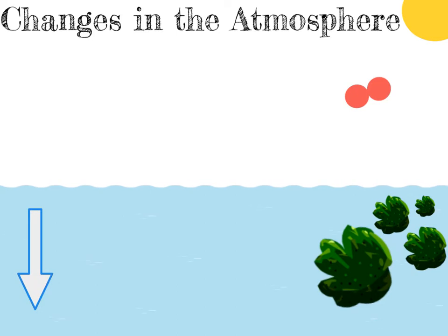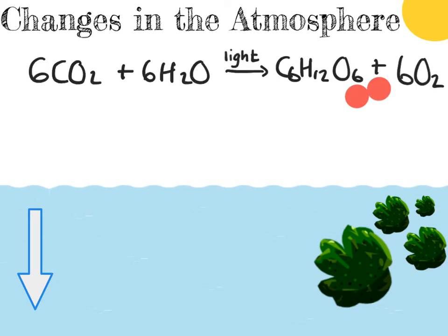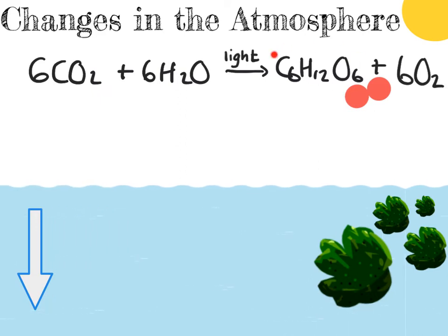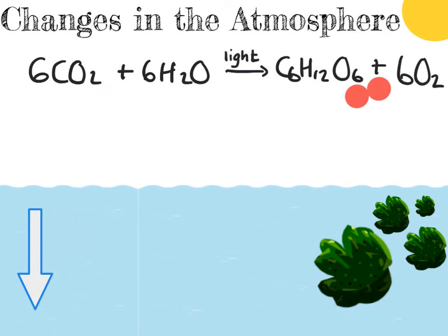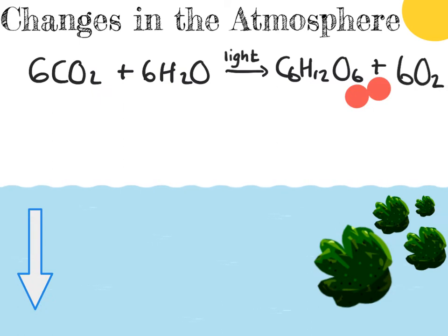You also need to know the equation for photosynthesis. Carbon dioxide is taken in by the algae, along with some water, and using light from the sun, it converts the carbon dioxide and water into C₆H₁₂O₆ — which is glucose — and releases oxygen gas. This is the symbol equation, and it is balanced, so you need to know how to balance equations. The word 'light' above the arrow means that light is a condition needed for this reaction.